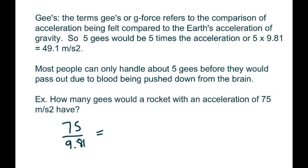This last example: if a rocket at liftoff is accelerating at 75 meters per second squared, how many Gs is that? Just divide by 9.81: 75 / 9.81 = about 7.6 Gs. A normal person would probably pass out. Astronauts train for it and also lay down flat so the blood is more horizontal, meaning the G-force isn't pushing straight down on top of their head, which makes it more manageable.